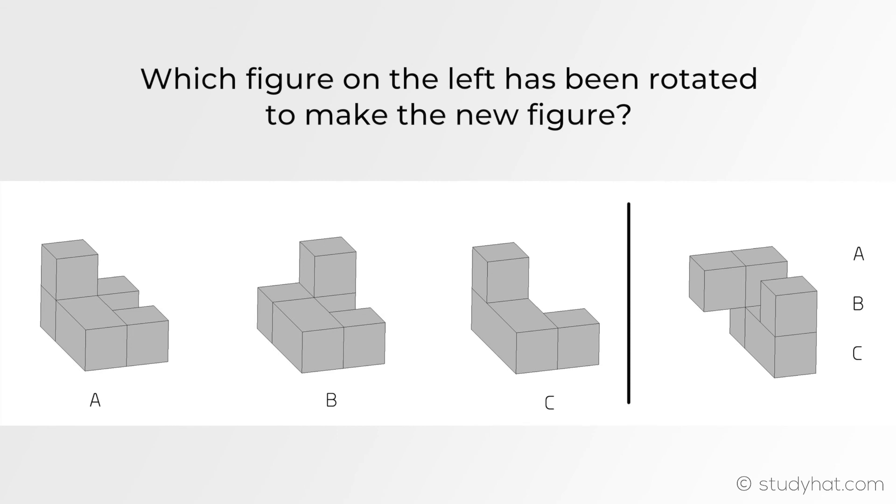Now have a go at this question. Pause the video and I'll reveal the answer in a few seconds. The answer is B. Hopefully you noticed that it is being rotated anticlockwise, so think of it as going to the left. If A was rotated to the left, you'll notice that this cube right here would end up being on the bottom, when really we need it to match the figure which has the cube on the top, which is why B actually matches up perfectly. That's it for today's lesson on 3D rotation. Don't forget to have a go at the quiz right after this, and I'll talk to you in the next one.